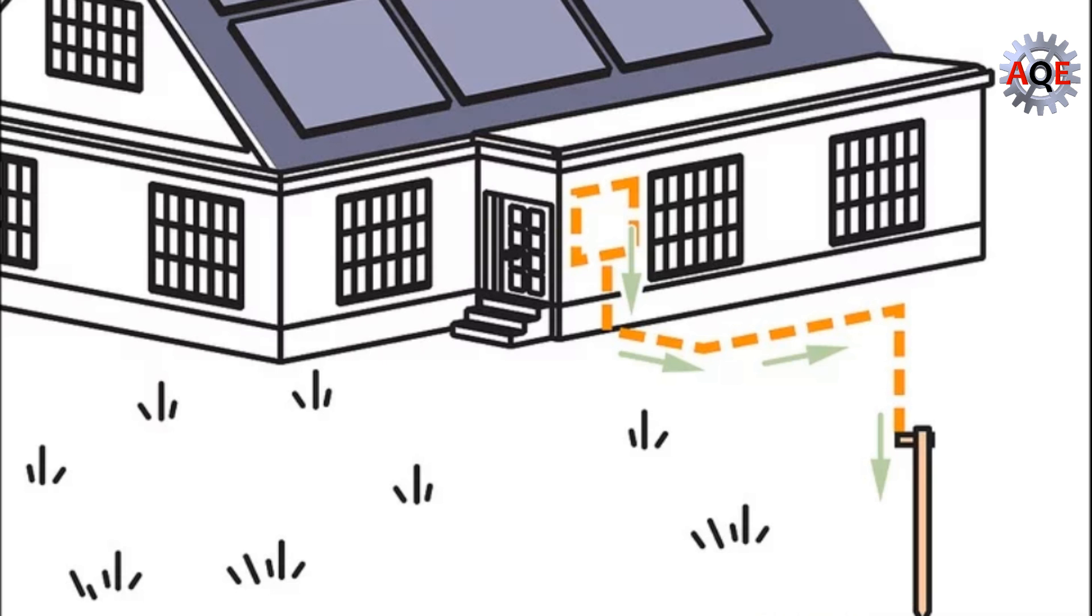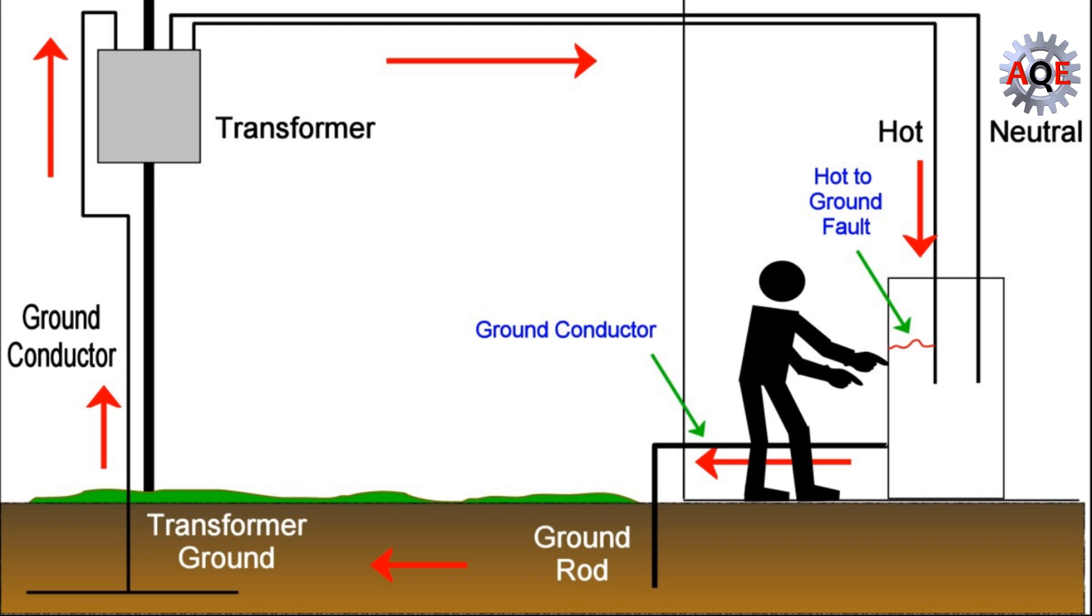The electrical grounding wire will have to connect to the soil outside of your home in some manner. Depending on your city or county zoning codes, this can occur in one of two ways.